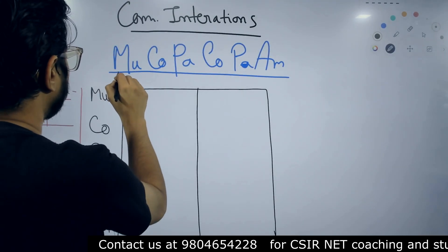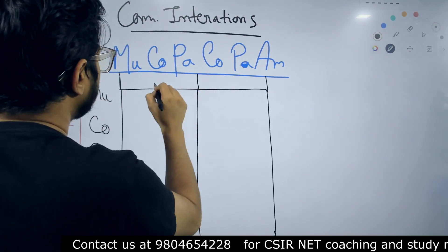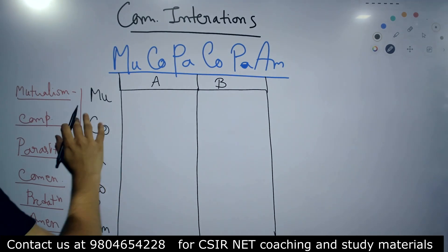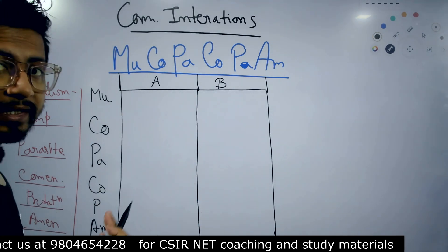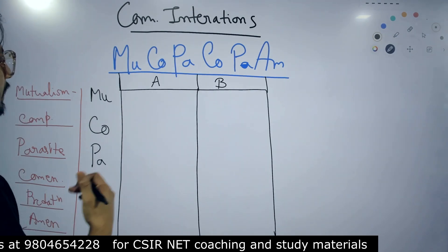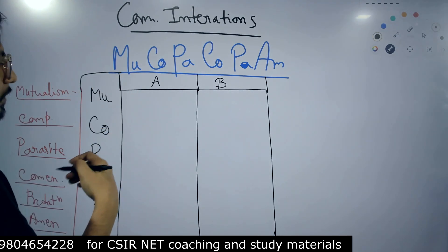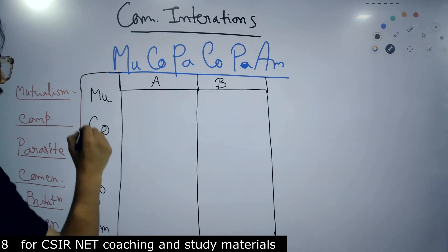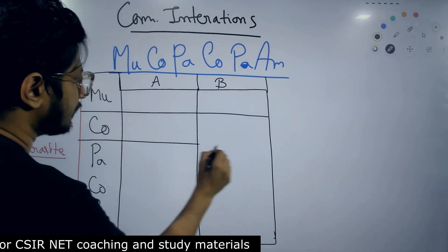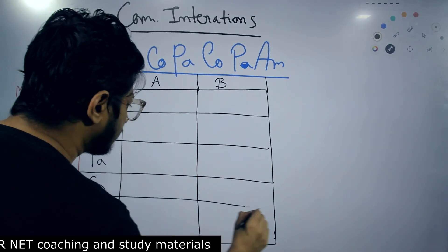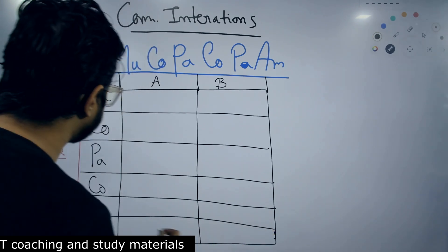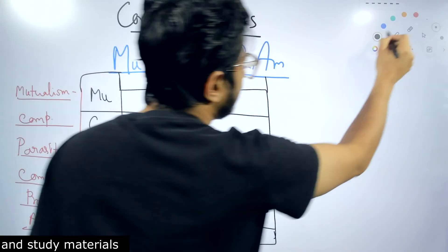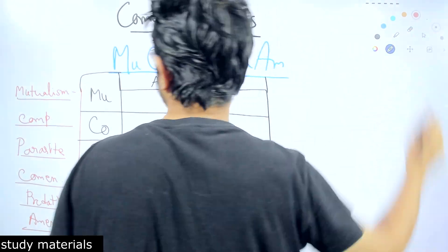We have two species — A and B — and we look at how they interact with each other: whether one will get the benefit and the other will be harmed, or whether both will get the benefit. These interactions will be represented in a table for all six examples. Muko-Pako-Pam is how you can remember and frame all six major interactions.